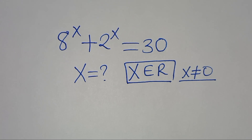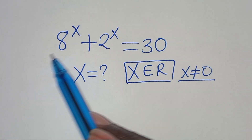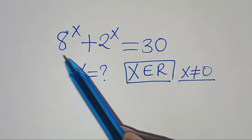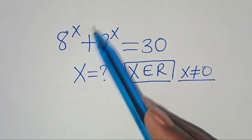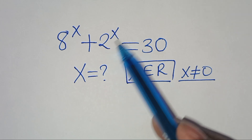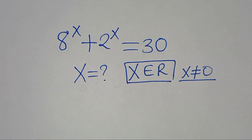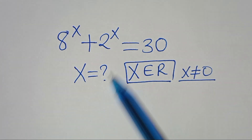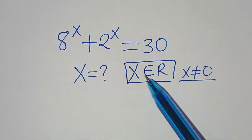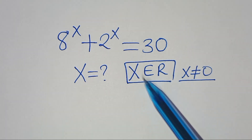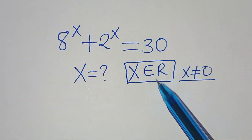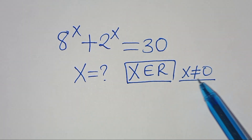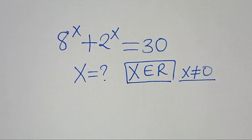Hello everyone, you are welcome to solve this nice exponential equation here, which is 8 to the power of x plus 2 to the power of x. This is equal to 30. What is the value of x, given that x is a member of real numbers and that x is not equal to 0?